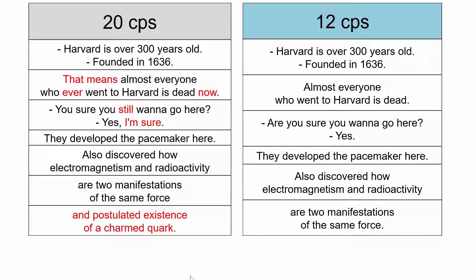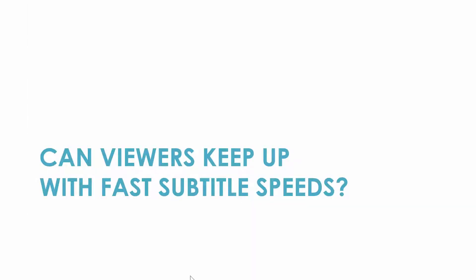As we said before, condensing text from the dialogue in subtitles is often necessary to provide people with a comfortable viewing experience, allowing them to read the subtitles and enjoy the film at the same time. However, given that many productions now are fast-paced and dialogue-heavy and that subtitle speeds have increased in recent years, we wondered if people can follow fast subtitles up to 20 characters per second, which are more and more often found in films and shows.